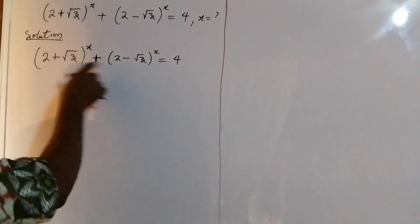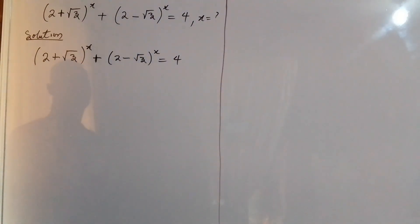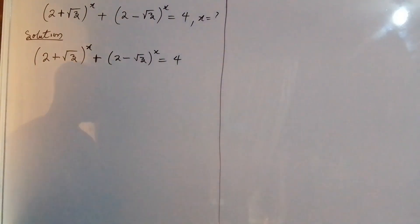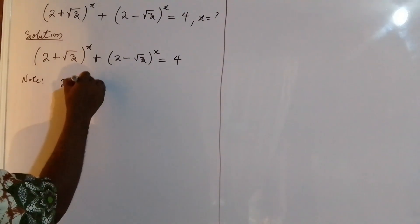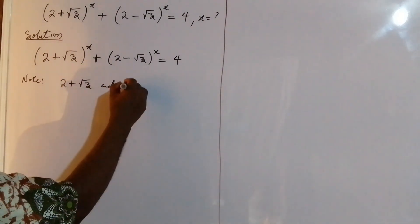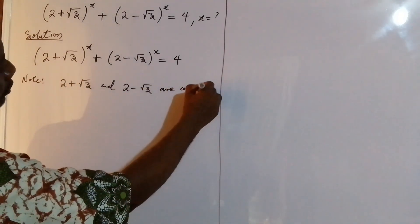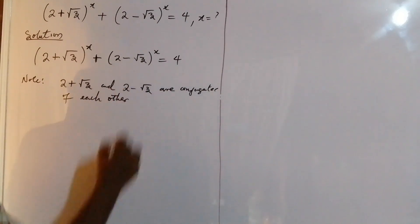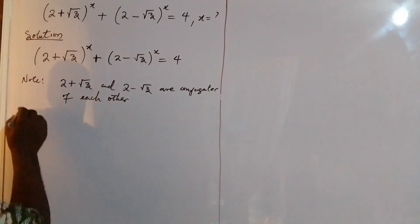Looking at the two terms, you will see that the bases are radicals, as I said earlier, but they are conjugates. So we are going to be dealing a lot with these two bases. The first thing I need to do is let you know that: note that (2 + √3) and (2 − √3) are conjugates of each other. That means the product of the two will give us one, and there is a simple identity that can help us do that.